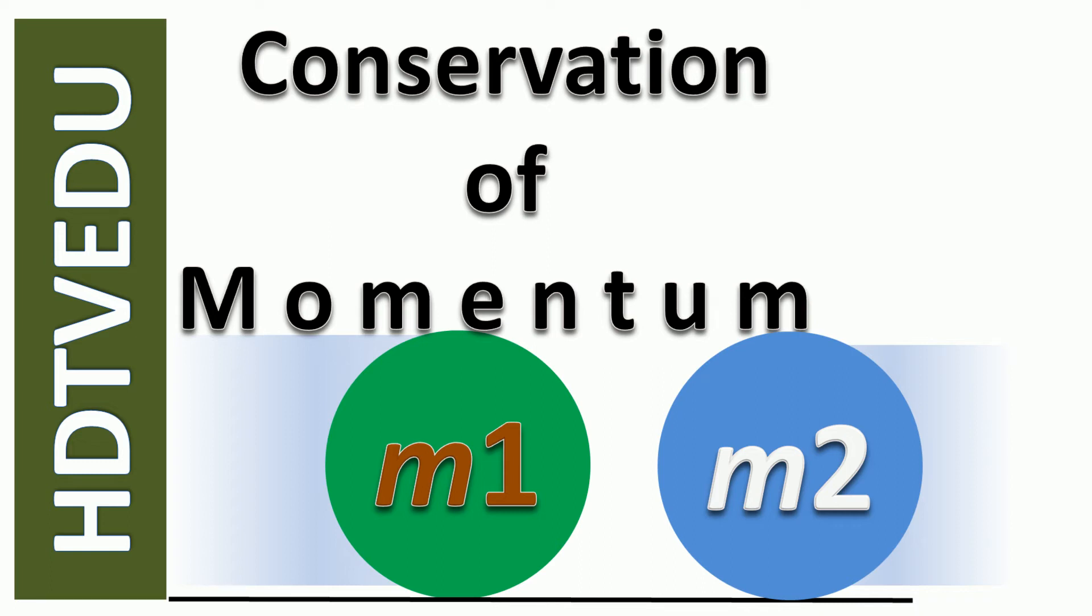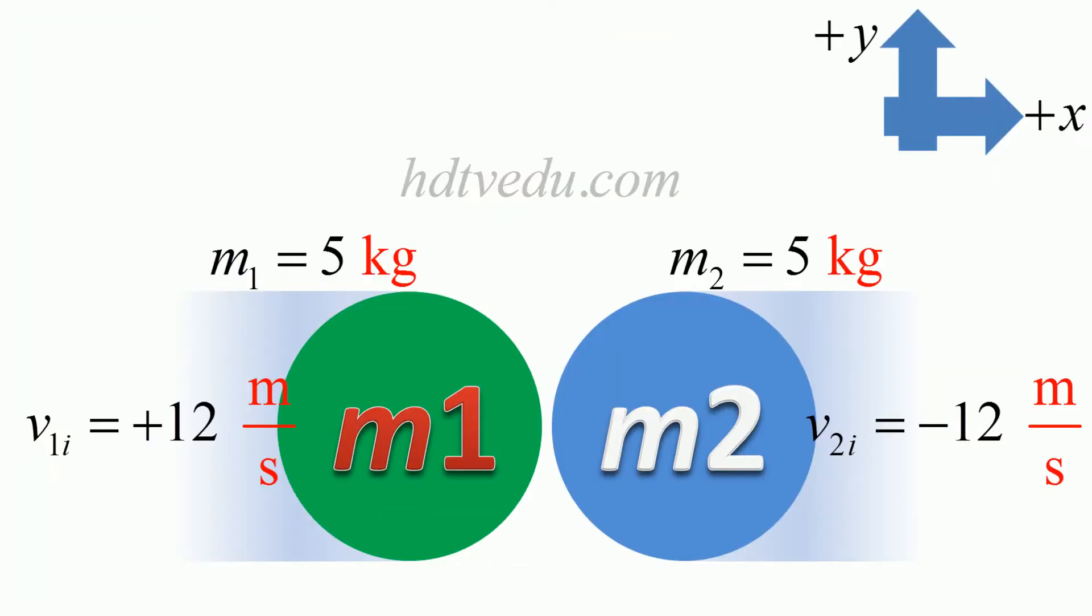Conservation of momentum. We have m1 and m2 moving towards each other. m1 is equal to 5 kg, m2 is equal to 5 kg. Velocity of the first object before collision is positive 12, that means it is moving to the right. Velocity of the second object before collision is negative 12, that means it is moving to the left.